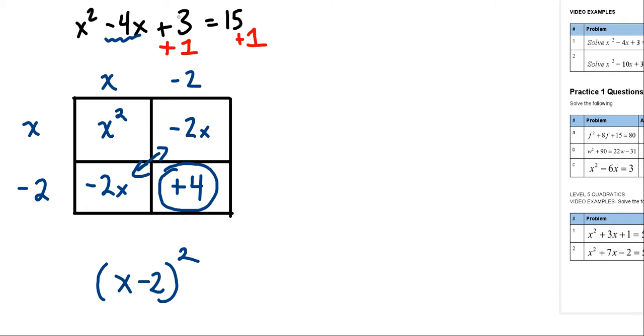Well then, that's okay. So, 3 plus 1 is now 4. I can now say the left-hand side is x minus 2 squared. And on the right-hand side, we're going to see we get 15 plus 1, which is 16. Oh, look at that.